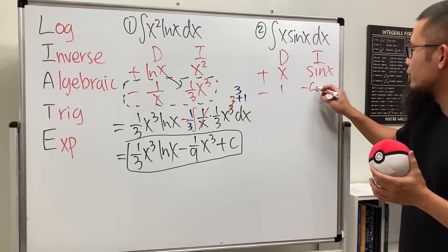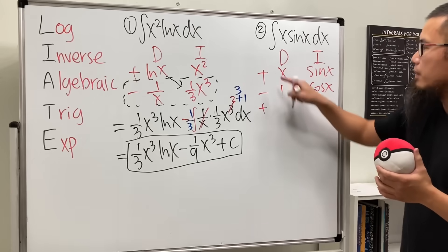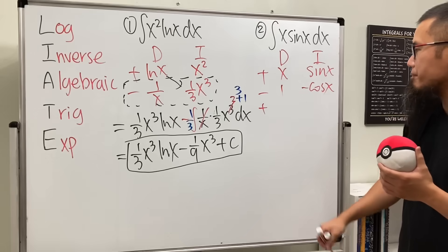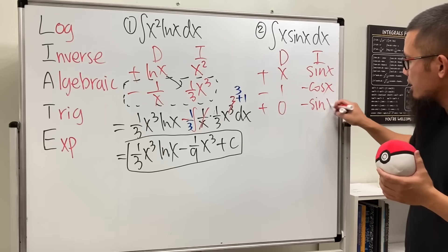Do it once and then do it right here. But we can get to zero, so let's do another row. Alternate the sign, right? Plus, minus, plus, minus, and also that. Do this again. We get zero. Do this. We get negative sine x.